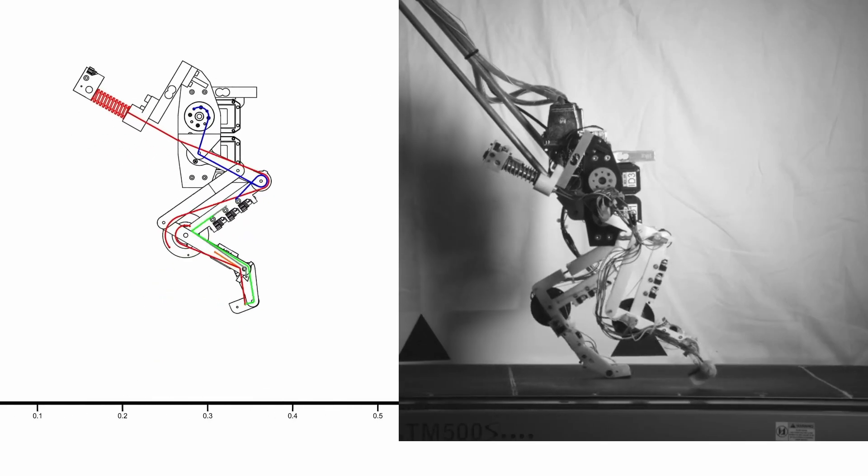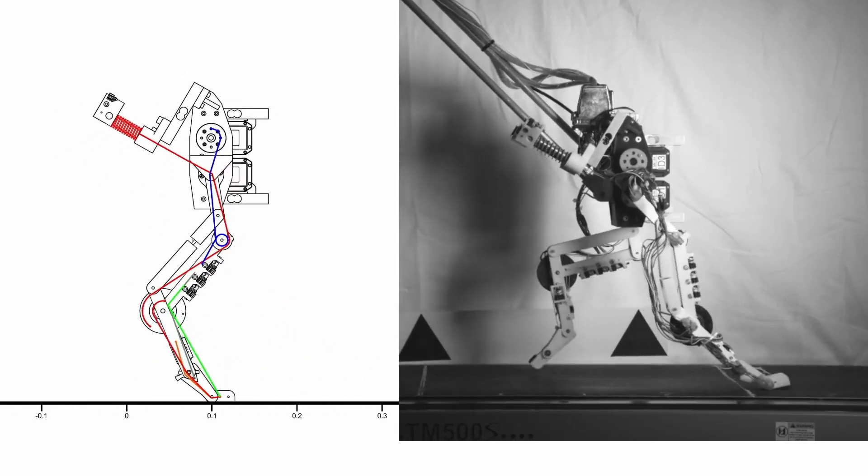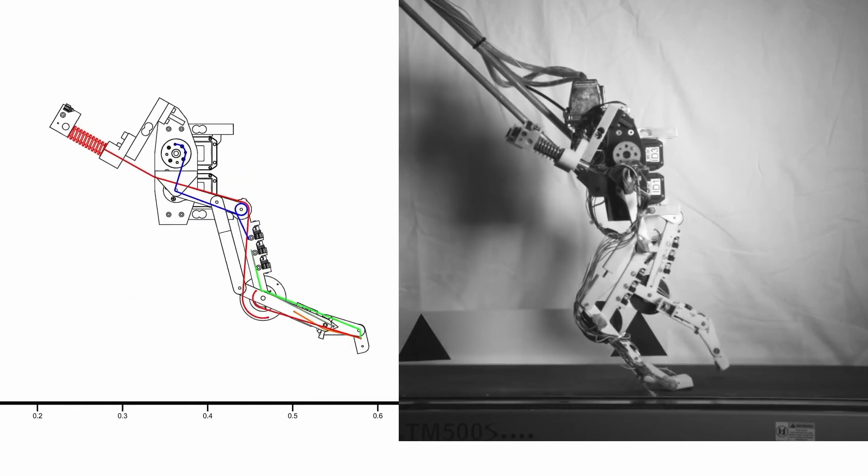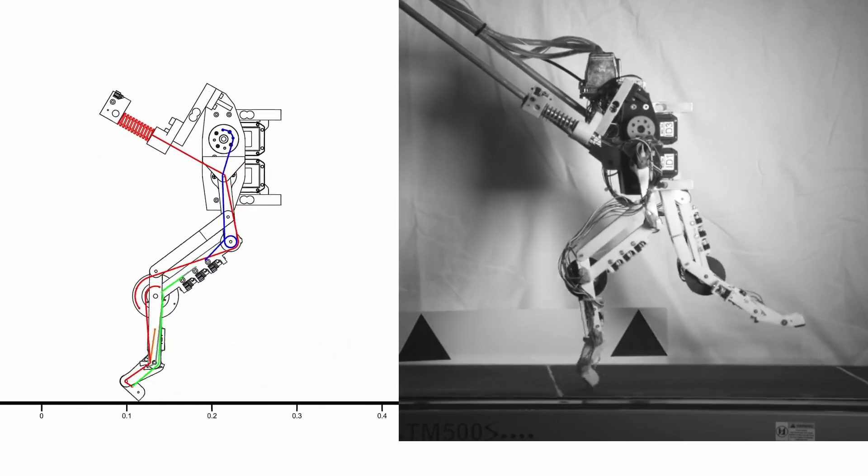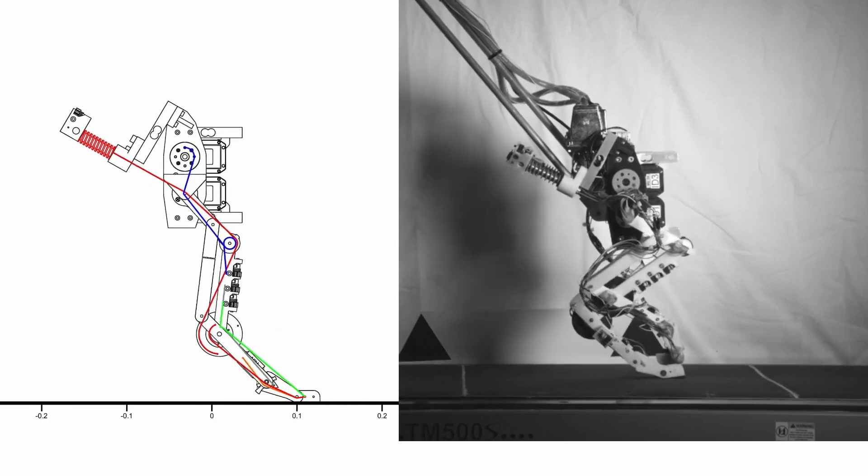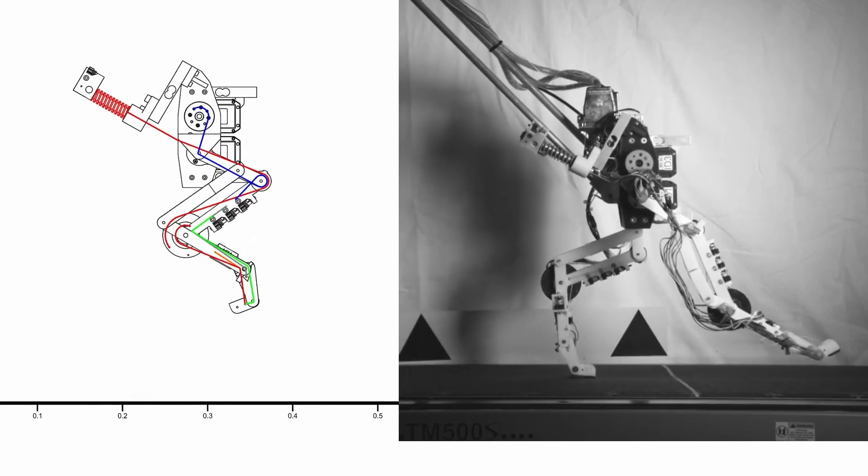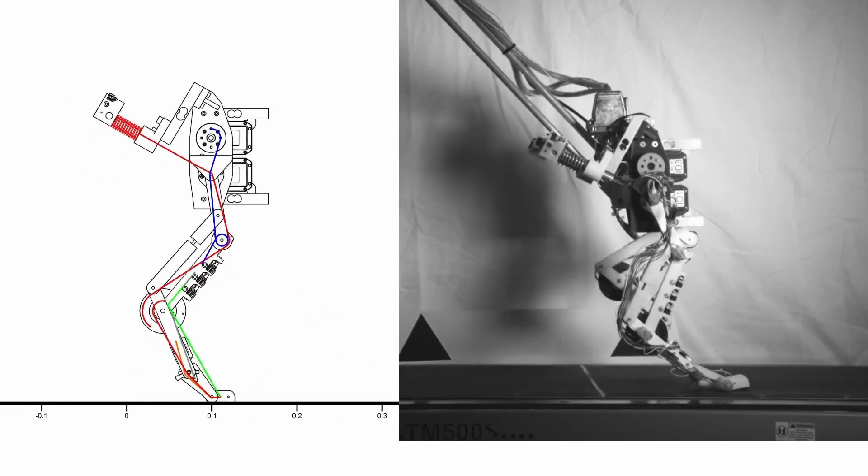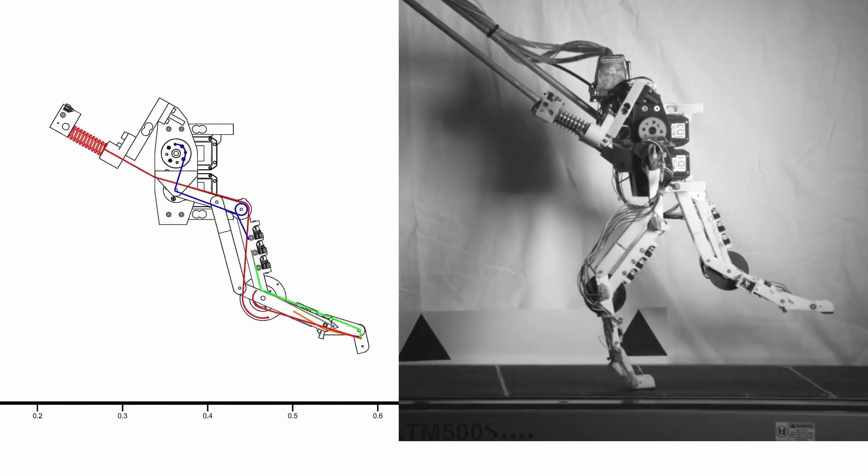Dedicated extensor tendons coordinate toe movements. They extend toes in preparation for touchdown. Toe joint flexion and ankle extension are mechanically coupled by toe extensor tendons. These tendons will act on toe joints in late swing phase.